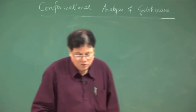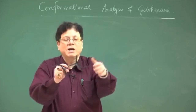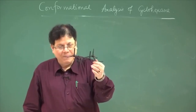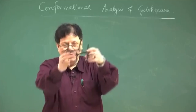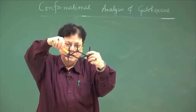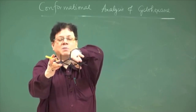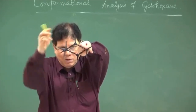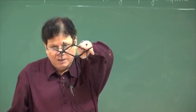Now let us inspect the energy of the two forms. In the chair form, cyclohexane obviously has 6 carbon atoms forming the ring. When I look between any two carbon-carbon bonds, I want to know what is the dihedral angle between the connected carbon-carbon bonds attached to those two carbon atoms.